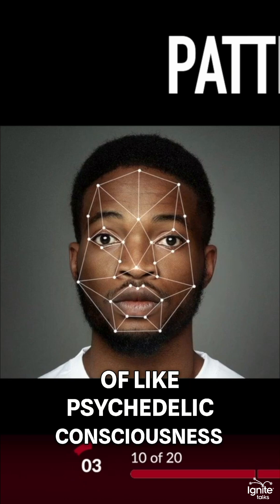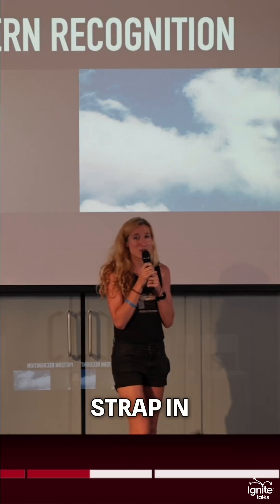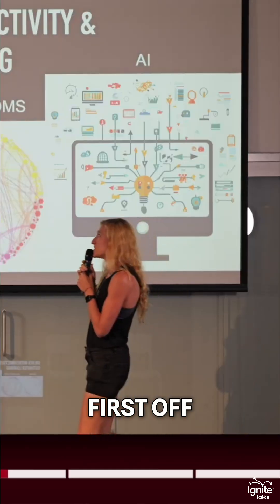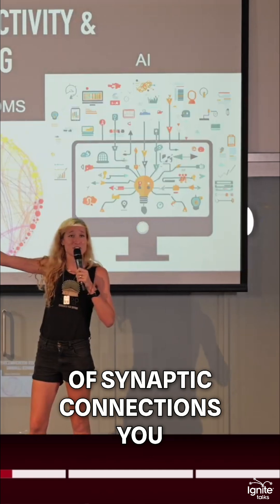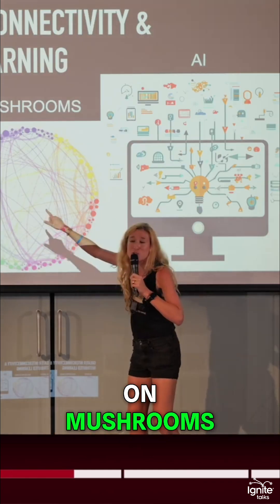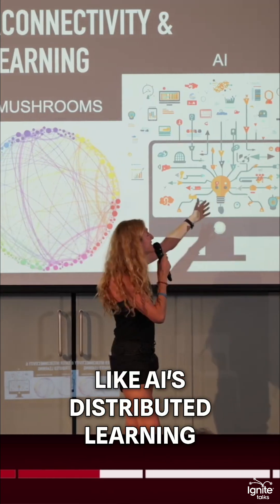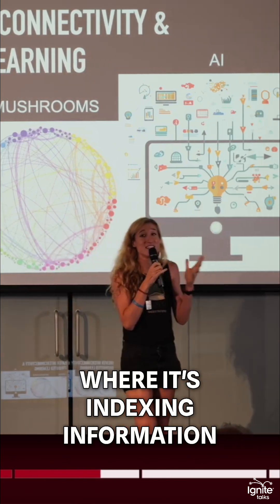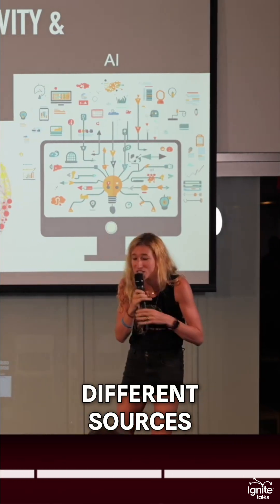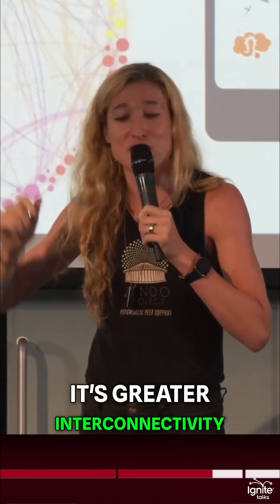Now we're getting into how AI is sort of like psychedelic consciousness. It's going to get weird. Strap in everybody. Okay, first off, this is the amount of synaptic connections you have in your brain sober. This is your brain on mushrooms. This is sort of like AI's distributed learning where it's indexing information from a lot of different sources. So it's greater interconnectivity.